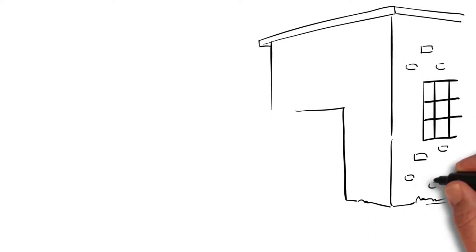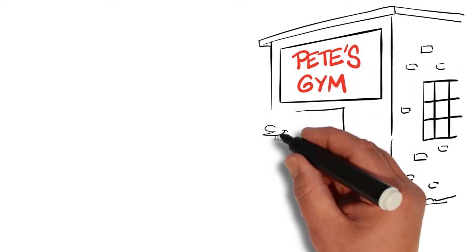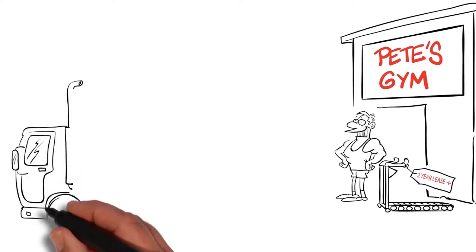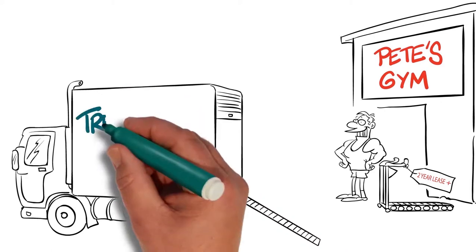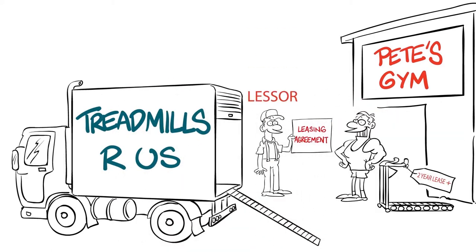Hire and rental businesses will often create personal property securities leases, or PPS leases, by setting up lease agreements with their customers. There's nothing particularly special they need to do. Generally, their standard leasing paperwork will create a PPS lease.